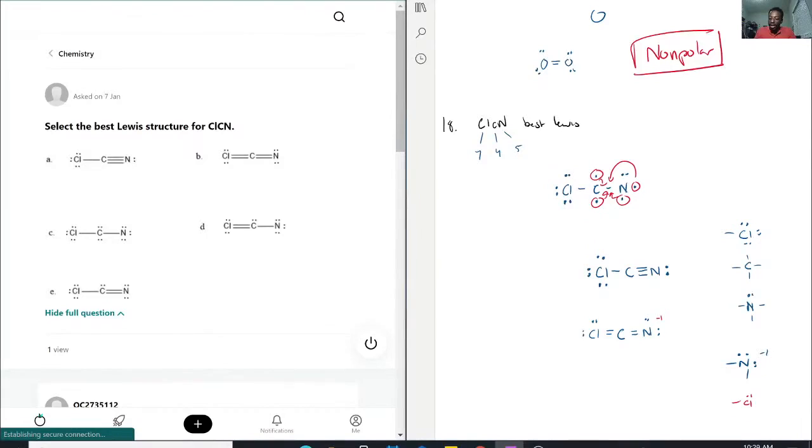And the chlorine also now has the same thing. It lost a lone pair and got turned into a bond, so that would actually mean it's plus one. Compared to what chlorine typically is, although we still have a net of zero, this is still a viable Lewis structure.